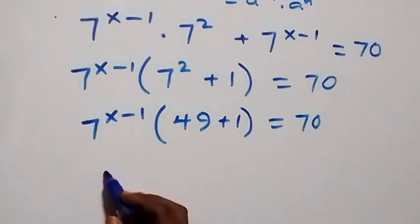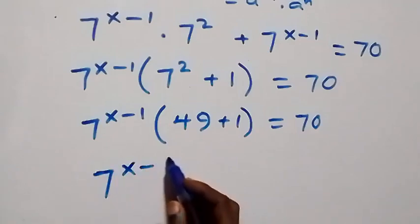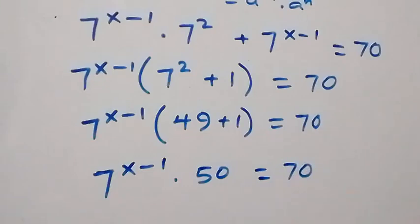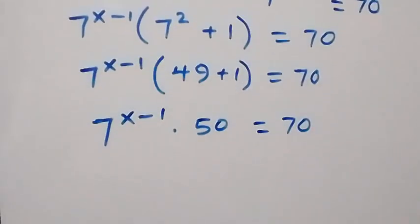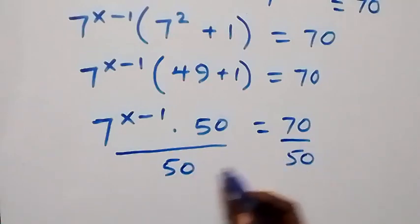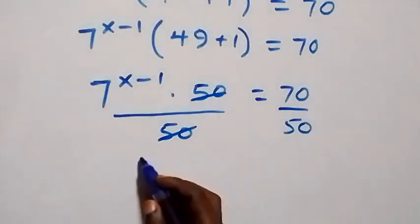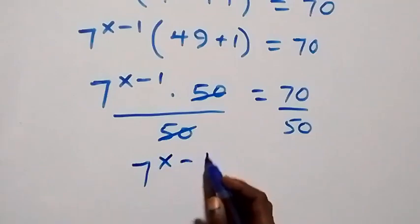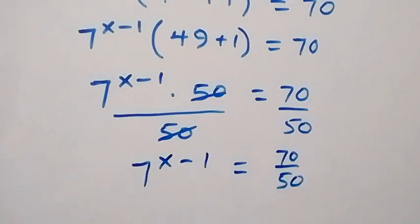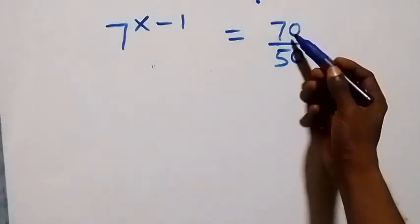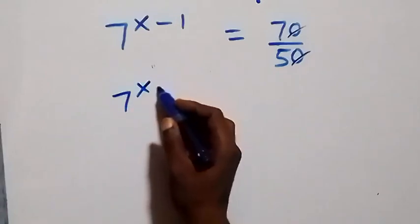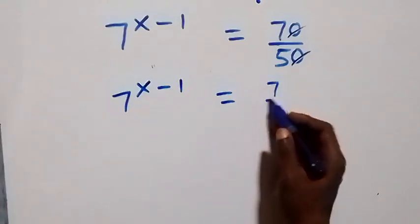This is the same as seven raised to power x minus one times 50 equals to 70. We divide both sides by 50 — 50 cancels — and we have seven raised to power x minus one equals to 70 over 50. Simplifying, 10 goes into both, giving seven over five. So seven raised to power x minus one equals to seven over five.